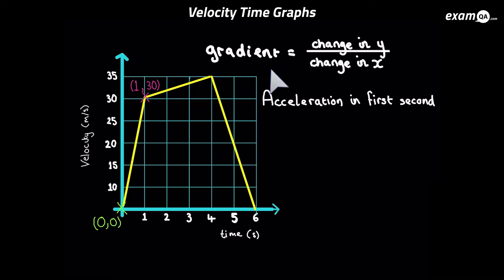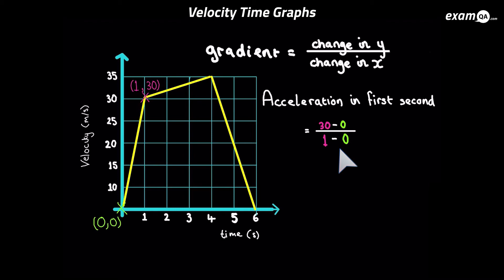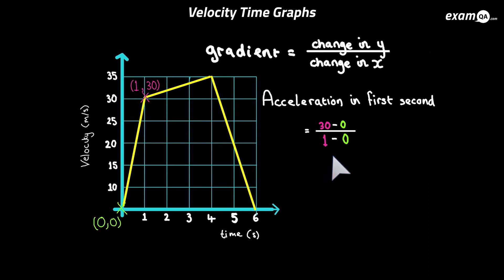Gradient is change in y over change in x. So we subtract the y-values of the two coordinates over the change in x where we subtract the x-values. It's very important you go the same way around: for the y's we did the y-value of the top coordinate minus the y-value of the bottom coordinate, and we must do the same for the x-values. We get 30 meters per second squared — so this is our acceleration in the first part of the journey.